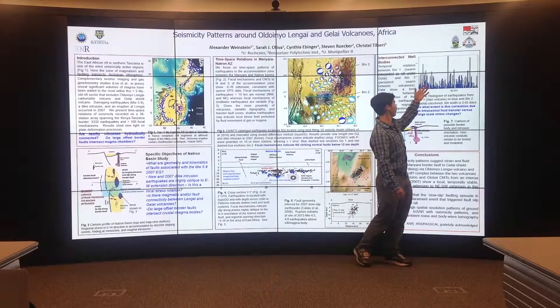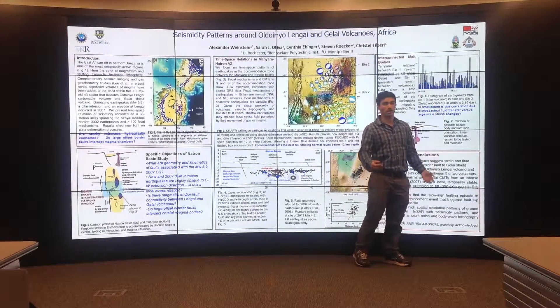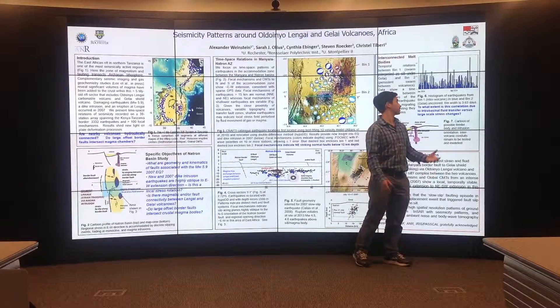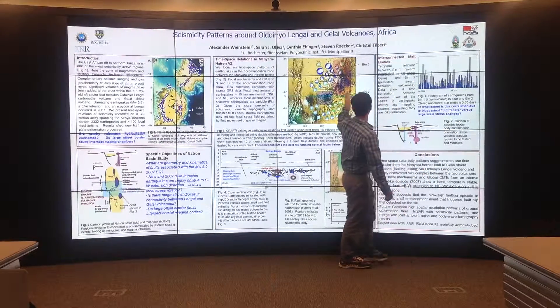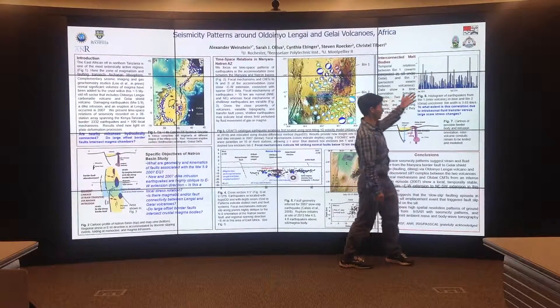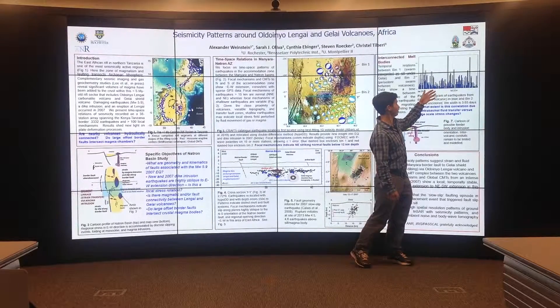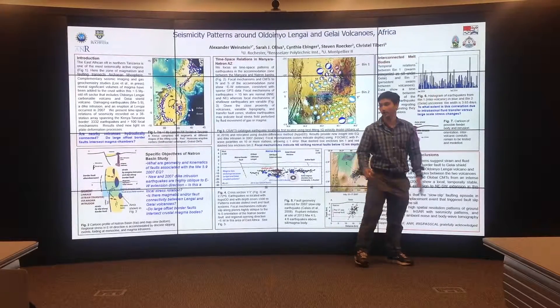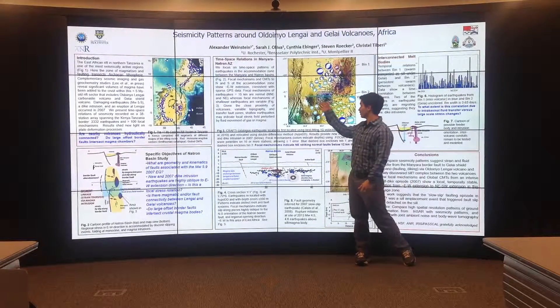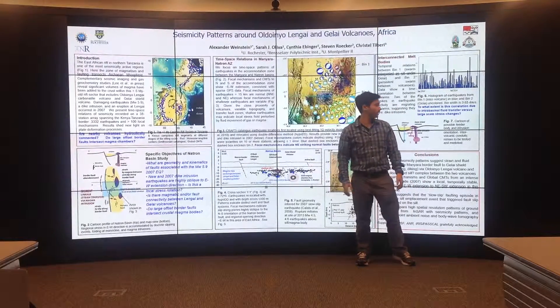We see here that earthquakes from bin 1 in blue almost always come at the same time as earthquakes from bin 2 in the intervolcanic area.